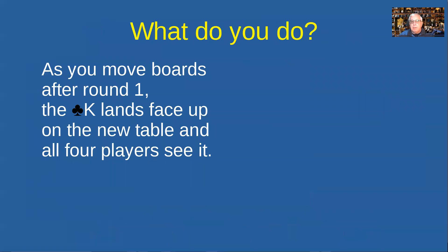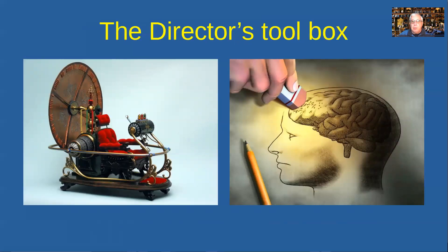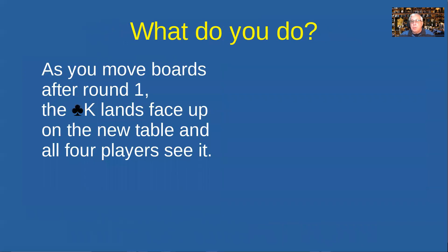You're director for the evening. Round one finishes and you pick up the boards to take to the next table, but as you do so the king of clubs lands face up on the table and all four players see it. You'd love to reach into your director's tool bag for a time machine to rewind so it never happened, or a memory eraser — but those aren't available. So what do you do? Do you go ahead and play the board?